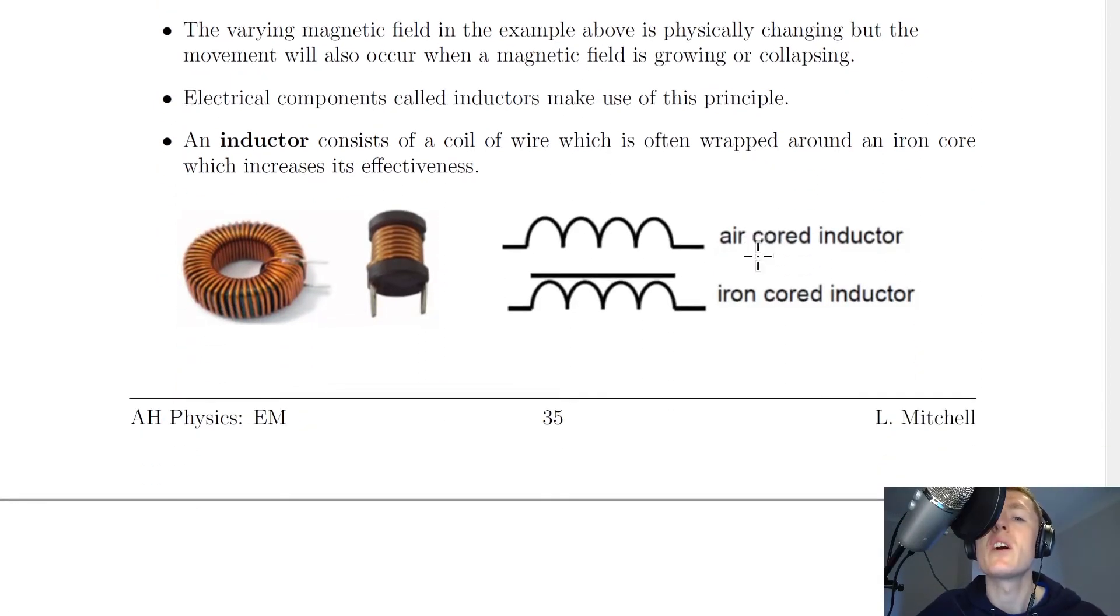So here is what an inductor actually is. So an inductor consists of a coil of wire, which is often wrapped around an iron core, which increases its effectiveness, increases something called its inductance.